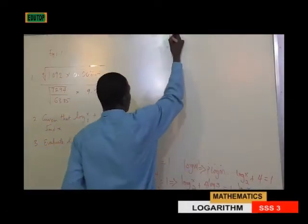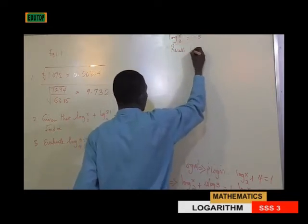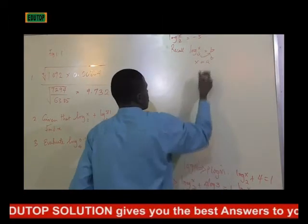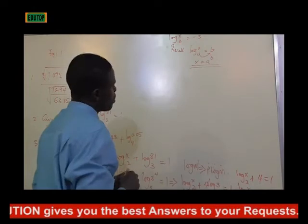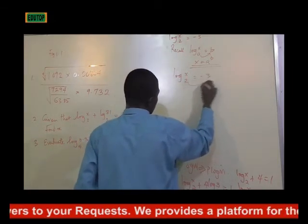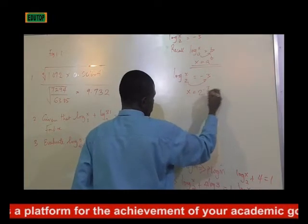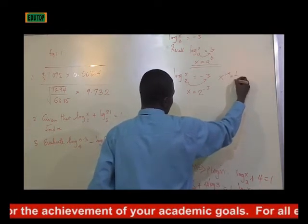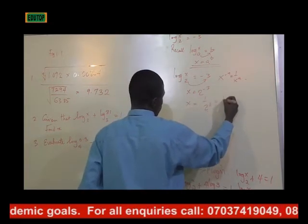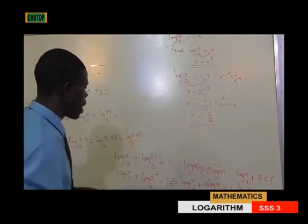Continuing from log x base 2 equals minus 3. Recall that log_a(x) = b can be written as x = a raised to power b. Applying that principle: x = 2 raised to power minus 3. By the law of indices, x to the power minus a equals 1 over x to the power a, so x = 1 over 2 raised to power 3, which is 1 over 8. So definitely, our x is 1 over 8.